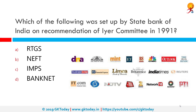Which of the following was set up by the State Bank of India on the recommendation of the IR Committee in 1991? That is Banknet. Banknet is a payment network established by the RBI on the recommendation of the IR Committee, functioning within India and launched in 1991. The system makes use of intercity trunk lines within India.